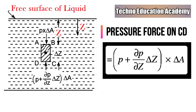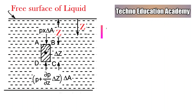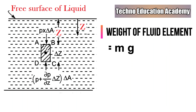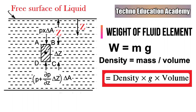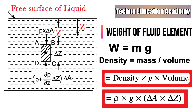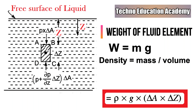The third one is the weight of the fluid element. We know that W equals mg, but the mass of the element is not given. However, we know the height and area of the element. So density equals mass upon volume, meaning mass equals density into volume. Therefore, weight W equals rho times V times g. The volume of the element equals delta A into delta Z, where delta A is the cross-sectional area and delta Z is the height of the fluid element.